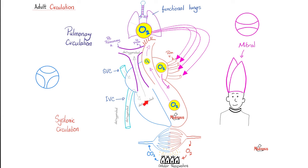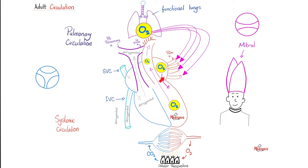Back to the deoxygenated blood in the right ventricle. It will be pumped through the pulmonic valve into the pulmonary artery and then to the lungs. The lungs will get rid of carbon dioxide through exhalation and then inhale some oxygen. All of that oxygenated blood will go to the left atrium via pulmonary veins, then through the mitral valve to the left ventricle, and you repeat the story again.